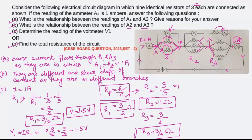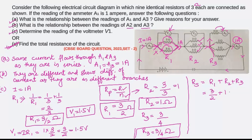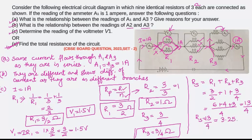Now we have R1, R2, and R3, and we need the total resistance. These equivalent resistances are connected in series, so the total resistance R_s = R1 + R2 + R3 = 3/2 + 1 + 3/4. Taking LCM of 4: that is 6/4 + 4/4 + 3/4 = 13/4 = 3.25 ohm. So the equivalent resistance of the circuit is 3.25 ohm.